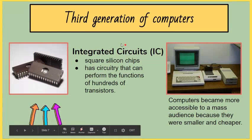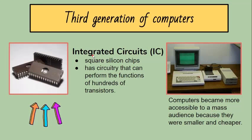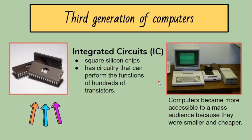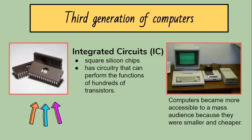The third generation of computers arose in 1965 with the invention of smaller electronic circuits called integrated circuits, or ICs. Integrated circuits are square silicon chips containing circuitry that can perform the functions of hundreds of transistors. Transistors were miniaturized and placed on silicon chips called semiconductors, which increased the speed and efficiency of computers. Instead of punched cards and printouts, users interacted through keyboards and monitors and interfaced with an operating system, which allowed the device to run many different applications at one time with a central program that monitored the memory.